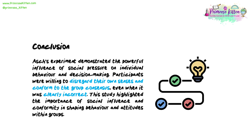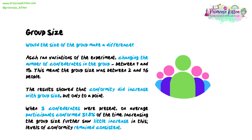Asch went on to carry out further research to understand how different factors may increase or decrease levels of conformity. Asch ran variations of the experiment, changing the number of confederates in the group, between 1 and 15, meaning the group size was between 2 and 16 people. Remember that one of the group would be a genuine participant and the rest would be confederates. The results showed that conformity did increase with group size, but only to a point. When three confederates were present, on average participants conformed 31.8% of the time. Increasing the group size further saw little increase — levels of conformity remained consistent.